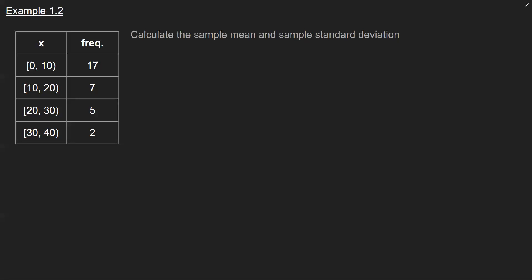If you recall the formula for sample mean — we have a little bit sophisticated notation here — it's x-bar, and it's simply the sum of all your x's divided by the number that you have. So let's sum up all these frequencies to find out how many total data points we have. If I add all of these together, it looks like 31. So I've got 31 data points summarized into four categories: 17 between 0 and 10, 7 between 10 and 20, and so on.